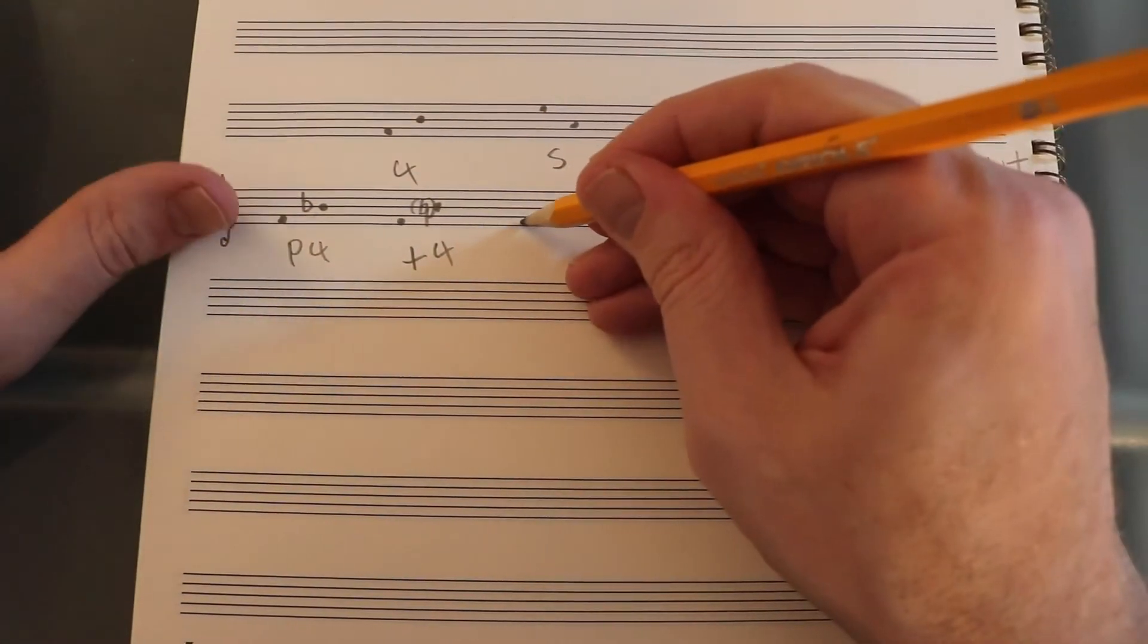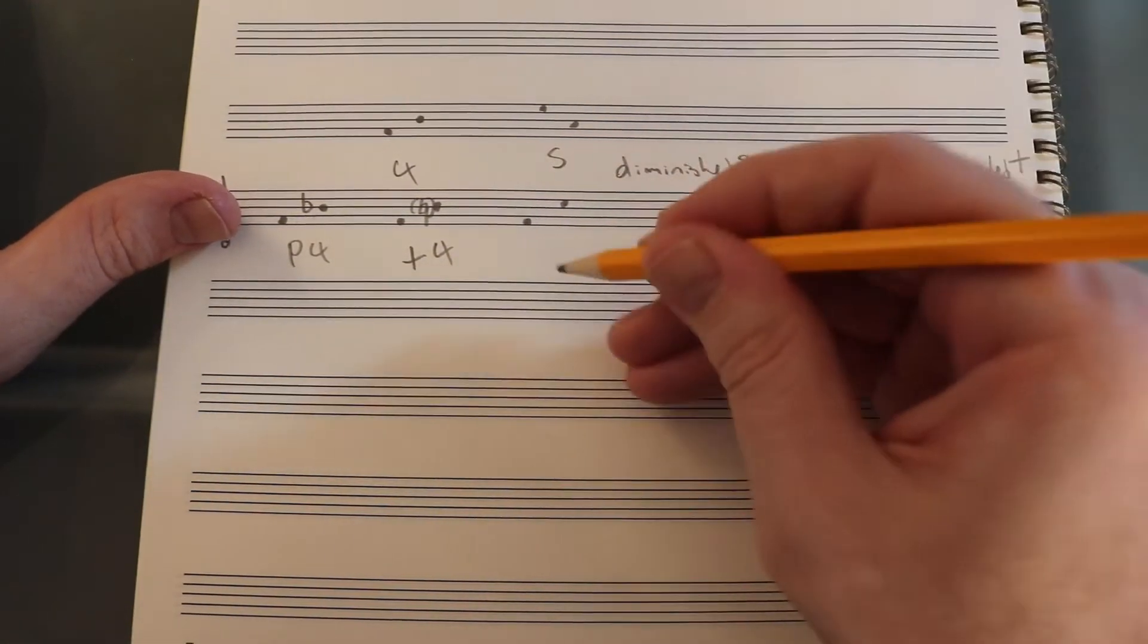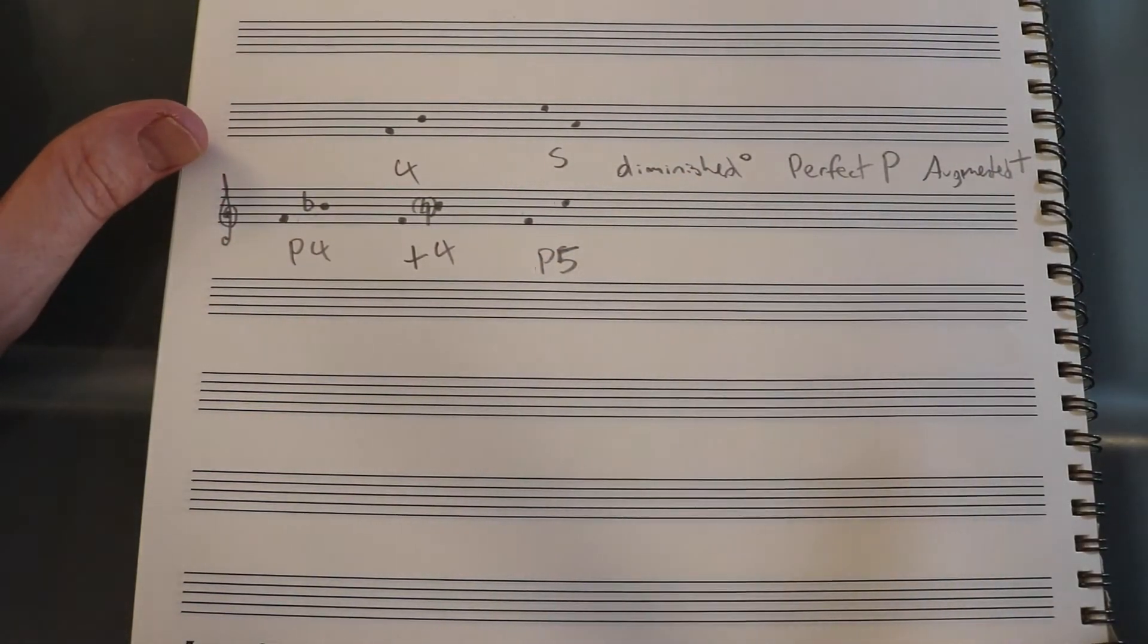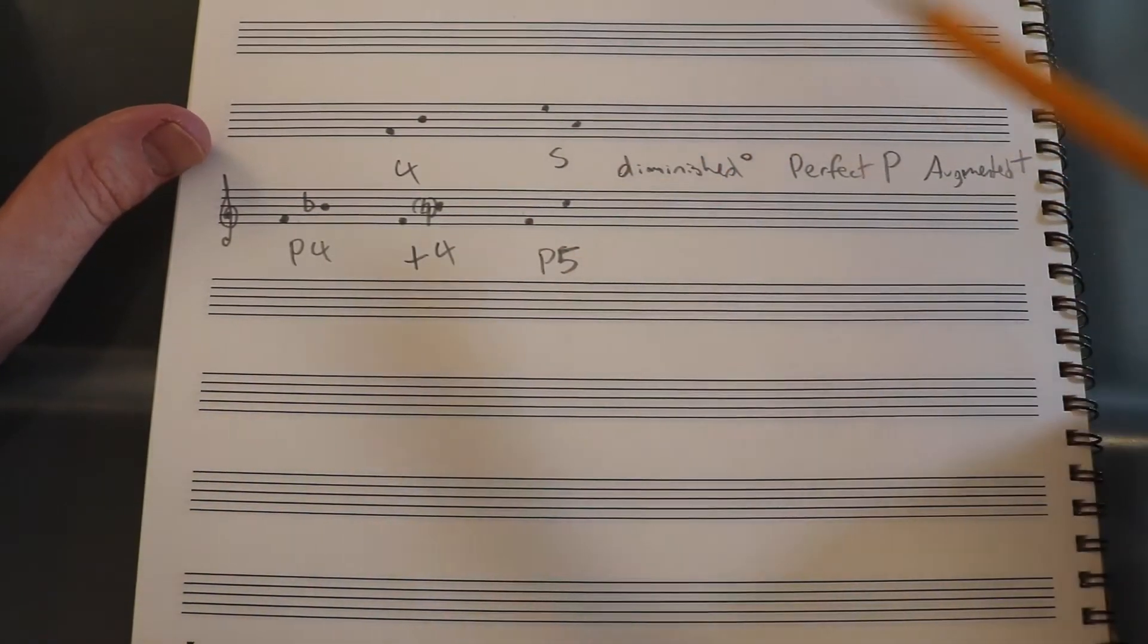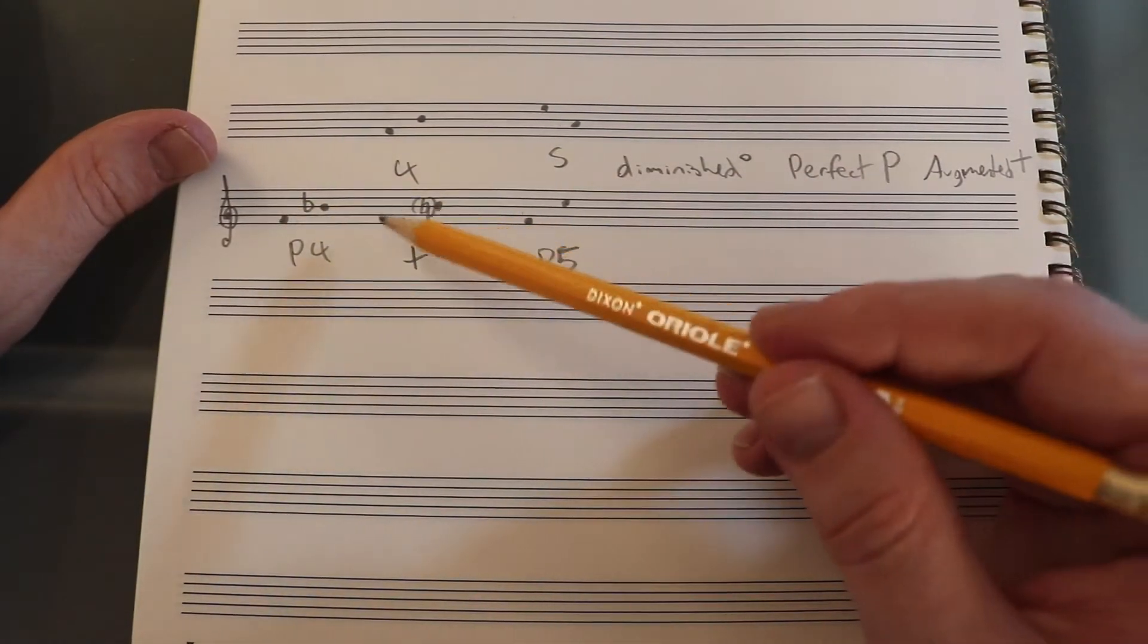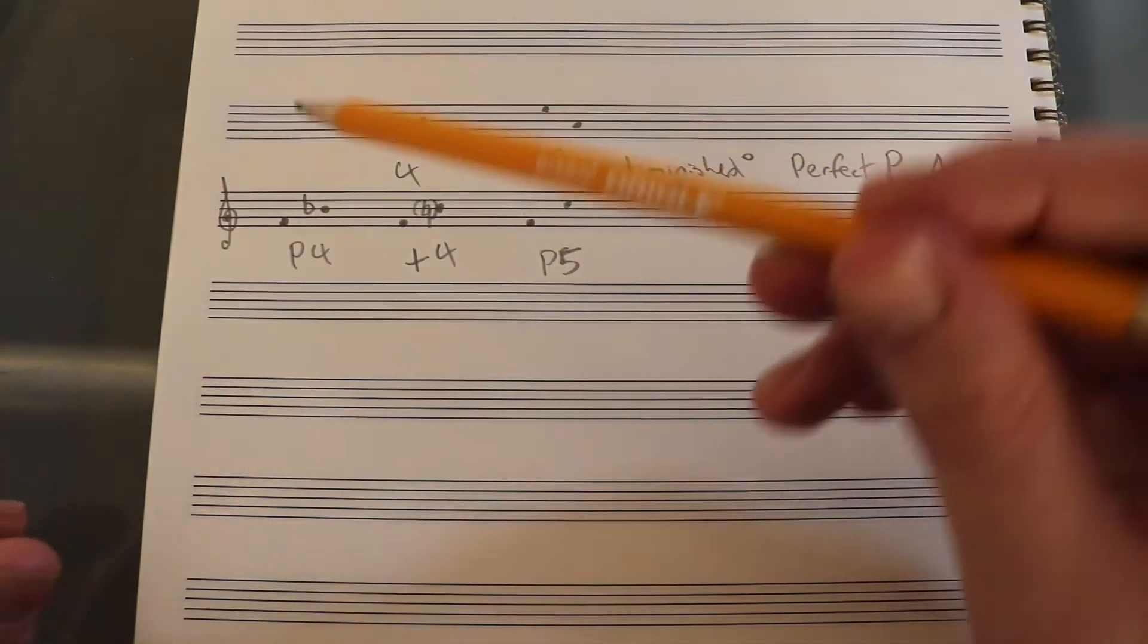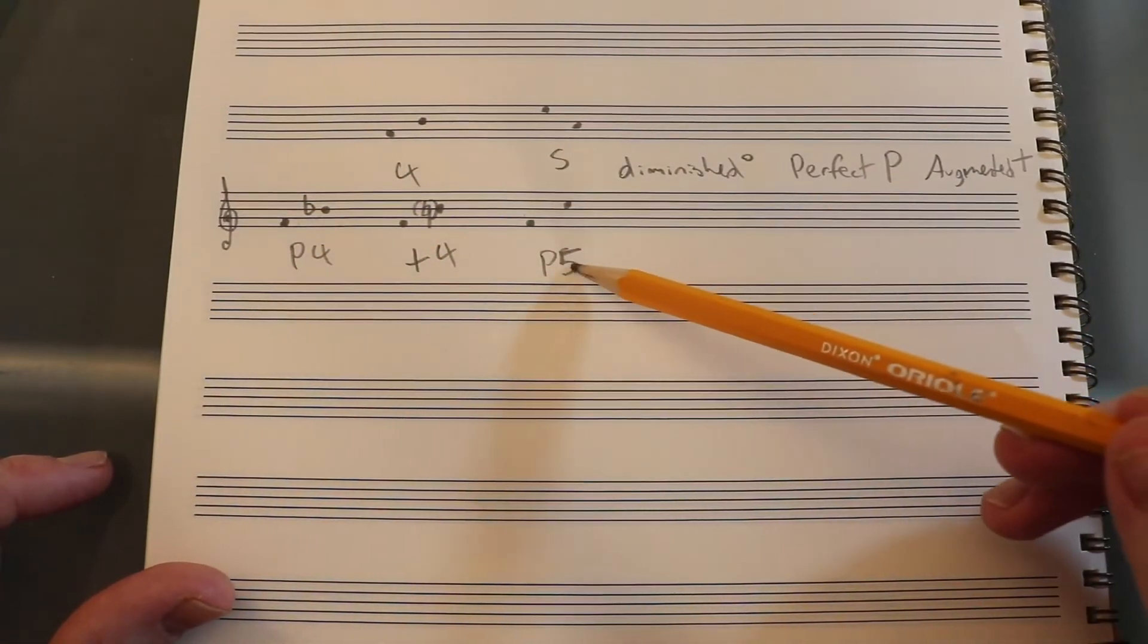Now, if I go from F all the way to C, now I've got a perfect fifth. We're going to do a video where we'll just practice these. This one is just to explain the concept. Another one will be to practice these. But for right now, I have my fourths. These are the only two fourths I'm going to use. Yes, there is something like a diminished fourth, but we're not going to use it for simple theory like this. So we have perfect fourth and an augmented fourth.